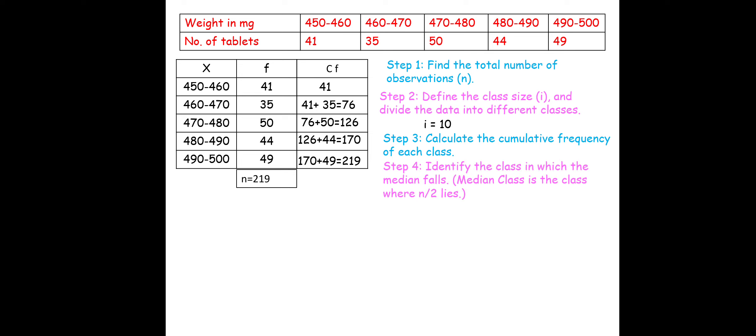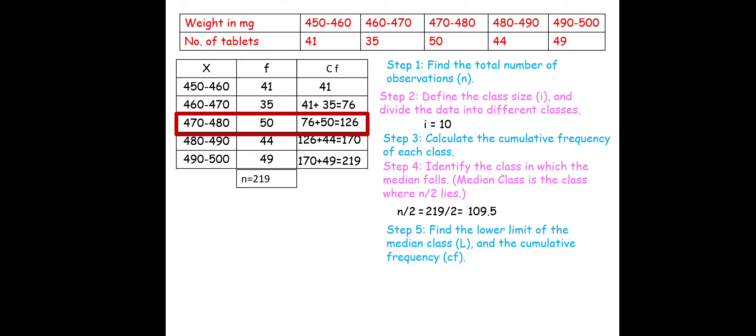Step 4: identify the median class. N/2 = 219/2 = 109.5. This lies between cumulative frequencies 76 and 126, so the median class is 470–480. Step 5: the lower limit L = 470, and the preceding cumulative frequency CF = 76.